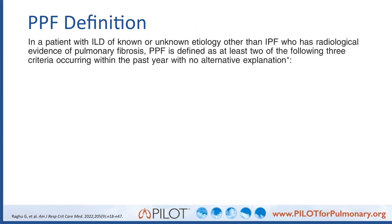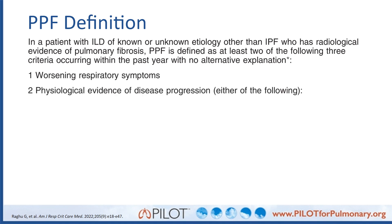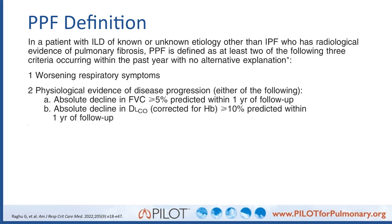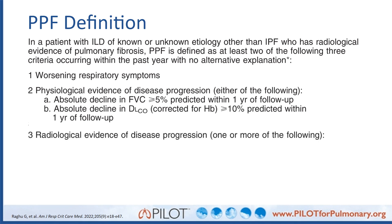This definition applies to a patient with ILD of known or unknown etiology other than IPF. To meet the criteria for PPF, patients have to have two of the following three criteria within the past year with no alternative explanation: worsening respiratory symptoms; physiological evidence of disease progression, either an absolute decline in FVC greater than or equal to 5% or an absolute decline in DLCO corrected for hemoglobin greater than or equal to 10%; and radiological evidence of disease progression, one or more of the criteria listed.